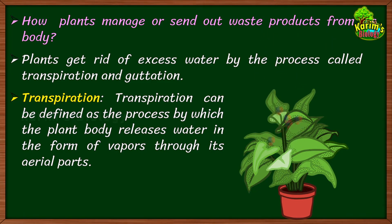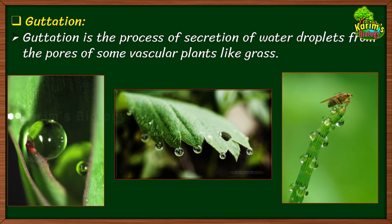Plants continuously absorb water through their roots, consume some of it, and the excessive water must be removed. There are two processes for this. The first is transpiration — the process by which the plant body releases water in the form of vapor through its aerial parts. Leaves have stomata, and excessive water is removed as water vapor through the stomata.